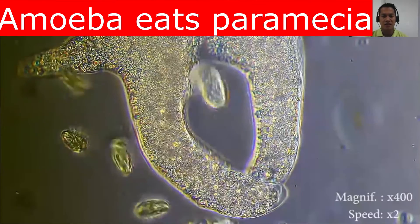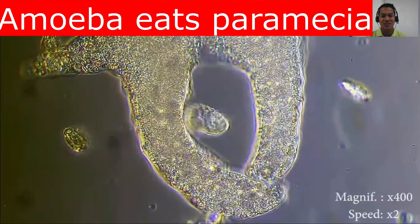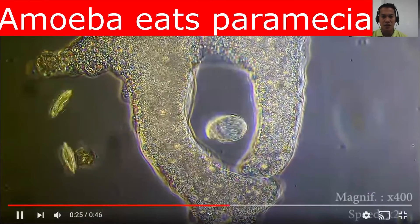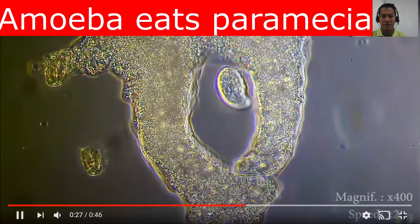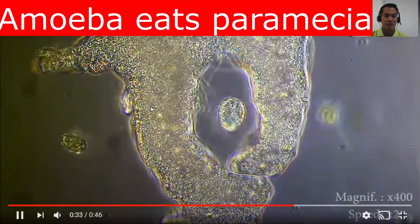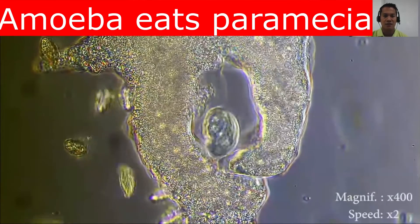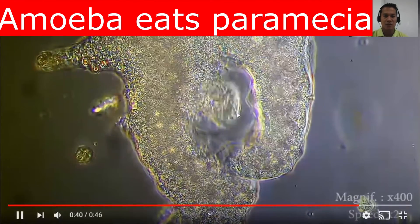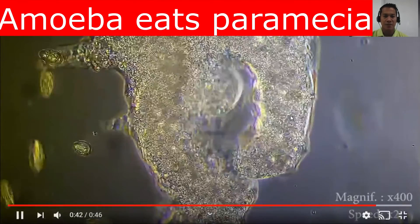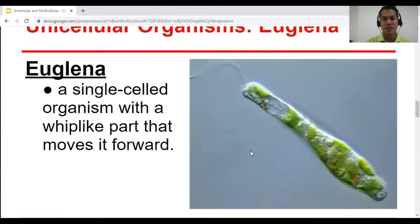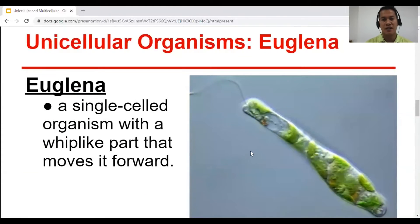You can see the movement of the cytoplasm right here — that's endocytosis. Now this paramecium is being trapped and being eaten. Next is Euglena.